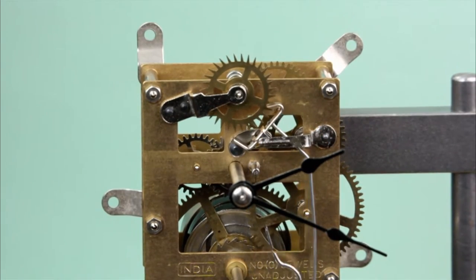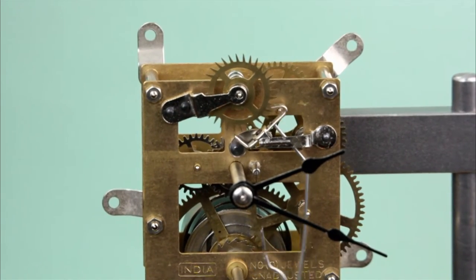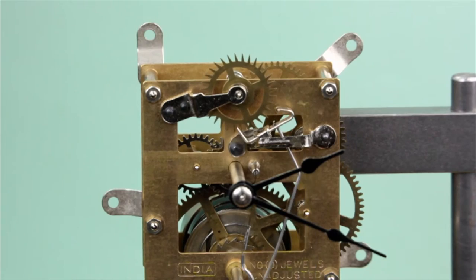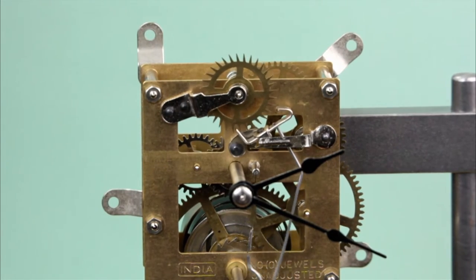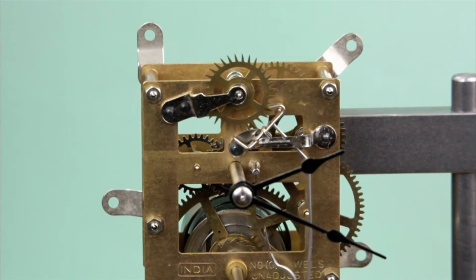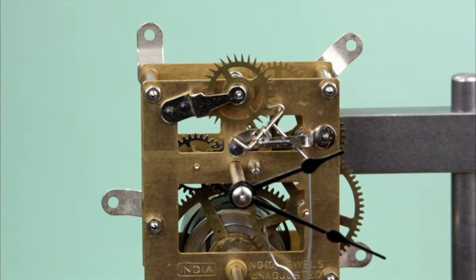It's also how the pendulum, in turn, controls the rate at which the teeth on the escape wheel are released through the pallets on the anchor. This provides accurate control of the rate at which the escape wheel turns.